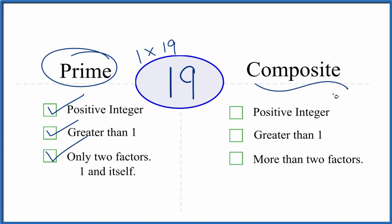But is it a composite number? Well, it's a positive integer, greater than 1. But are there more than two factors? We just said there are only two factors. And because of that, 19 is not a composite number. It is a prime number.